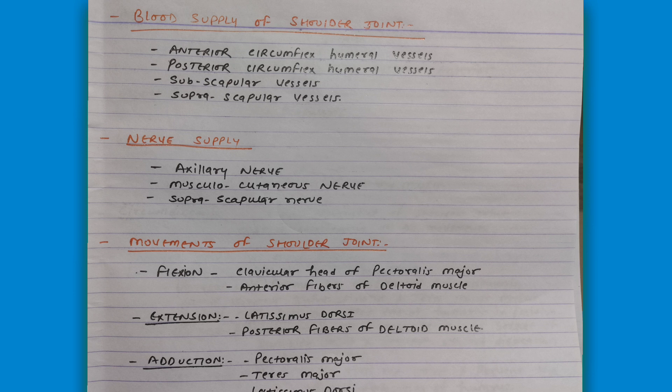The most important heading is the movements of the shoulder joint. For short notes, write the name of each movement and the muscle responsible. The first movement is flexion, which occurs due to the clavicular head of pectoralis major and the anterior fiber of the deltoid muscle. Extension is due to latissimus dorsi and the posterior fiber of deltoid. Adduction is due to pectoralis major, teres major, and latissimus dorsi — all three muscles related to the bicipital groove.